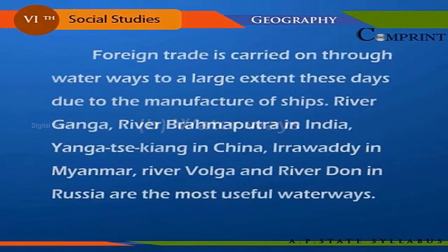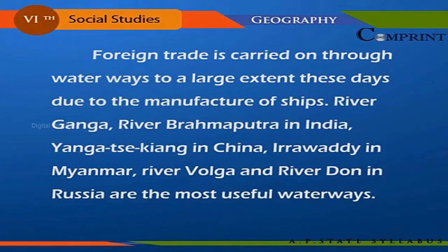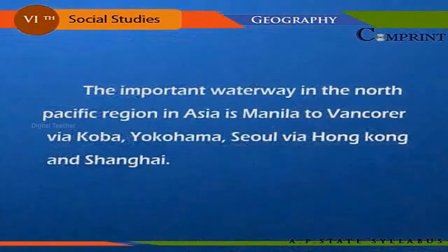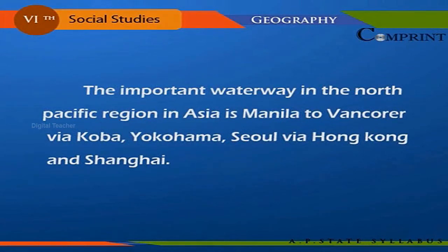Foreign trade is carried on through waterways to a large extent. River Ganga and River Brahmaputra in India, Yangtze Kiang in China, Irrawaddy in Myanmar, River Volga and River Don in Russia are the most useful waterways. The Suez Canal is important to India for transport. The important waterways in the north Pacific region in Asia run from Manila to Vancouver via Kobe, and Yokohama to Seoul via Hong Kong and Shanghai.